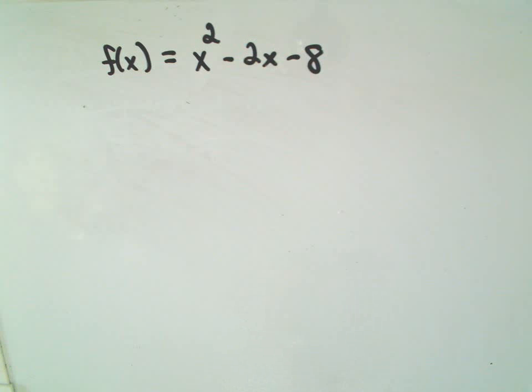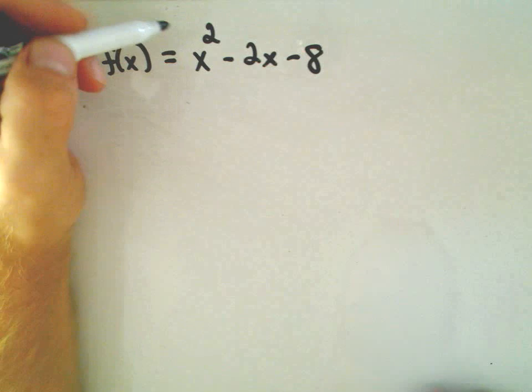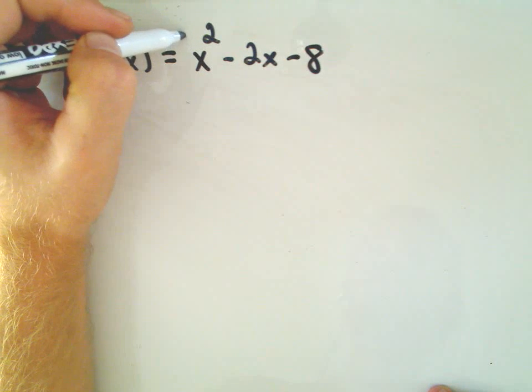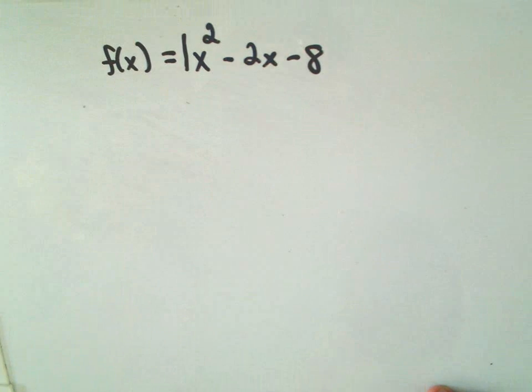So let's do one here. x² - 2x - 8. We don't see a coefficient in front of the x², but it's understood that that's a 1.